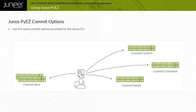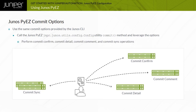To save configuration changes to the configuration database and activate the configuration on the device, use the config object commit method. The Junos PyEasy config object commit method supports commit operations that are equivalent to the options provided by the Junos CLI.